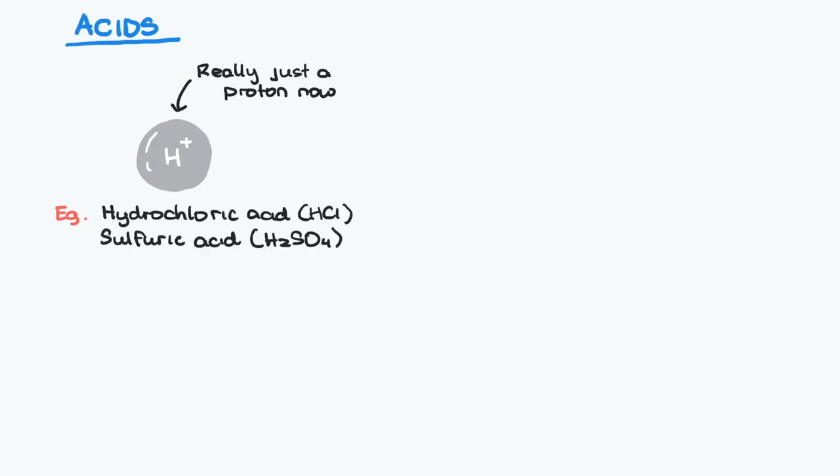Acids are those substances that donate hydrogen ions, which is just a hydrogen atom with its electron removed, which are essentially protons. The most popular examples being hydrochloric acid and sulfuric acid, both of which contain protons ready to be donated.